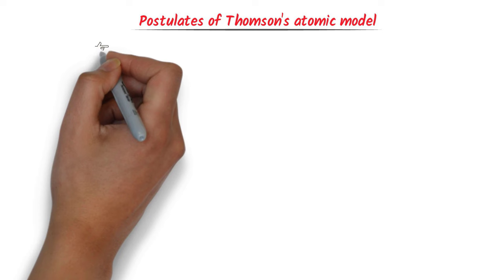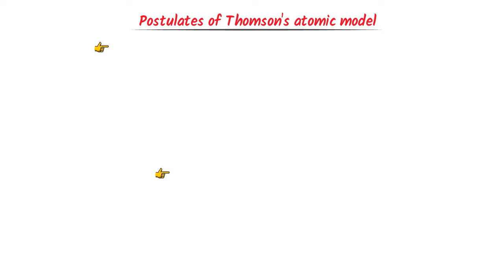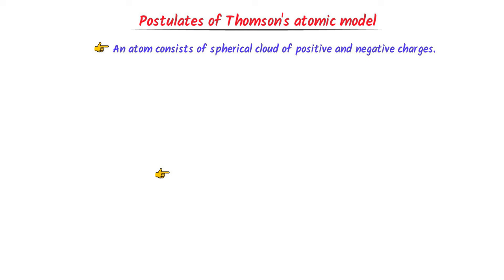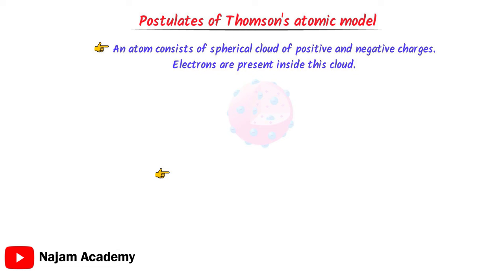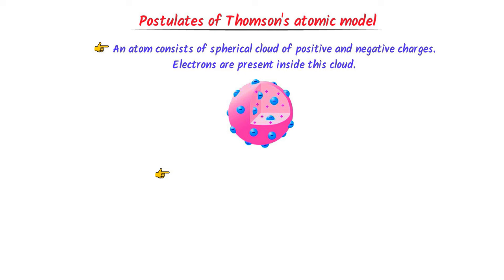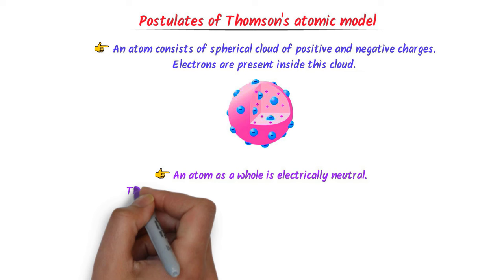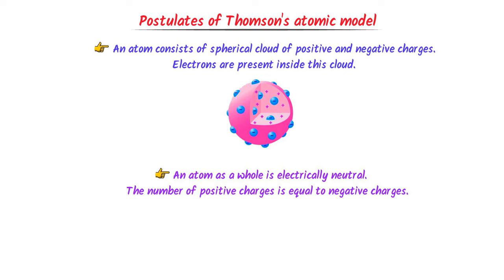Now, what are the postulates of Thomson's atomic model? There are two important postulates. The first states that an atom consists of a spherical cloud of positive and negative charge, meaning electrons are present inside this positively charged cloud. The second postulate states that an atom as a whole is electrically neutral, because the number of negative charges equals the number of positive charges. For example, if there are 10 positive charges in an atom, then there are also 10 electrons. They cancel each other out and the atom as a whole is neutral.